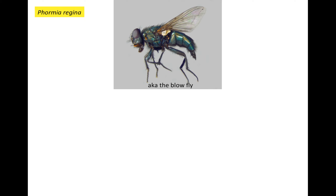These flies are particularly useful in forensic investigations because they can act as a clock. They come in and lay eggs after the individual has died, which means the minimum post-mortem interval — the time between the discovery of the body and when the individual died — correlates to the age of the insect discovered on the body. So if you can figure out how old the maggot is, you can work backwards and get this minimum post-mortem interval.